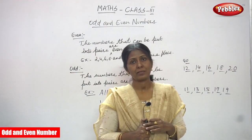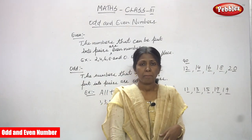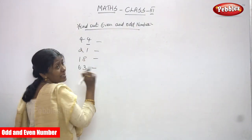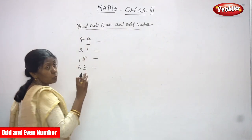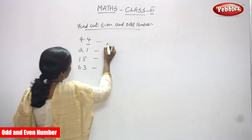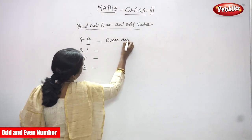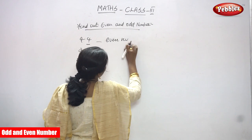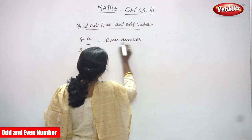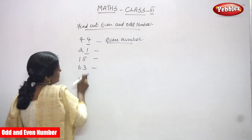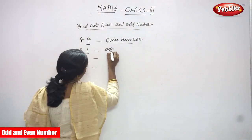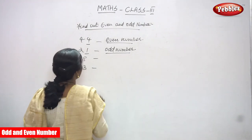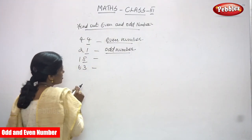Now let's find out even and odd numbers. Look at 44 — the ones digit is 4. Since the number ends with 2, 4, 6, 8, or 0, this is an even number. Next is 21 — look at the ones digit, it ends with 1. Since the number ends with 1, 3, 5, or 7, it is an odd number. Next is 18 — look at the ones digit, it is 8, so it is an even number.